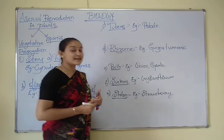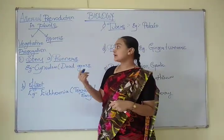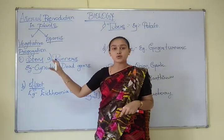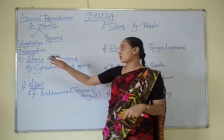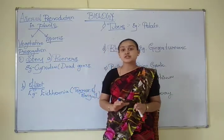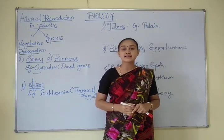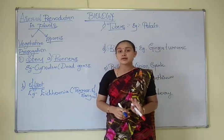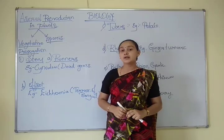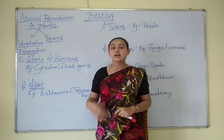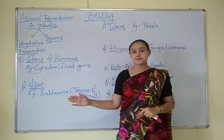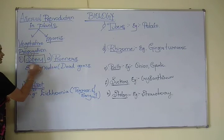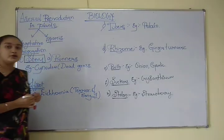Vegetative propagation is an asexual type of reproduction in plants where the vegetative organs are involved to produce a new plant. The different vegetative organs involved are stem, root, and leaves.